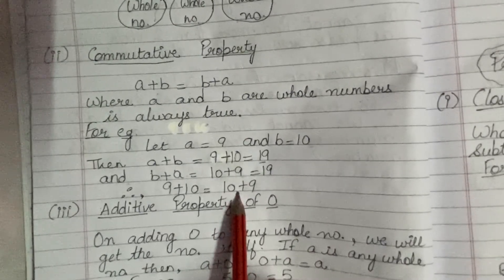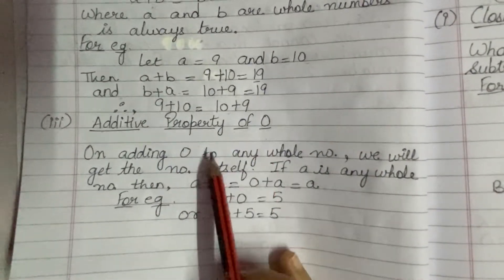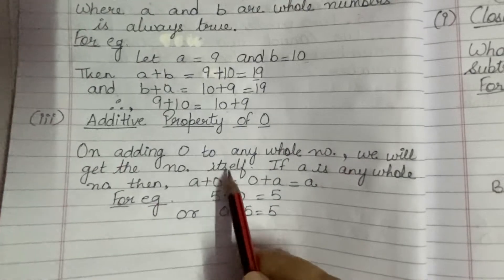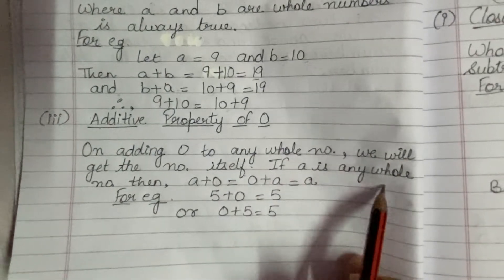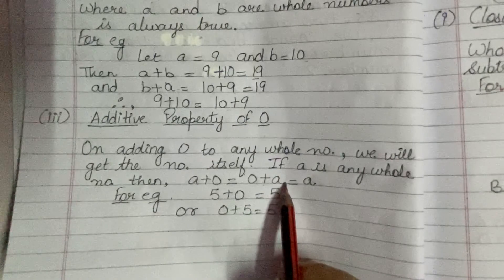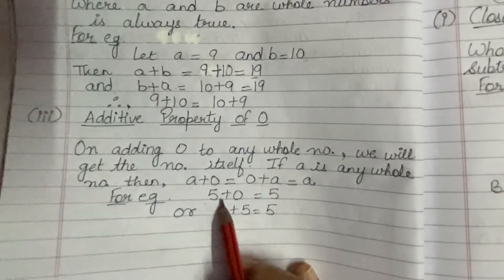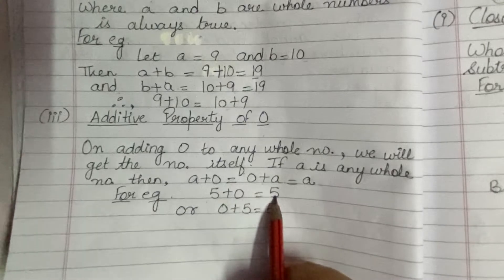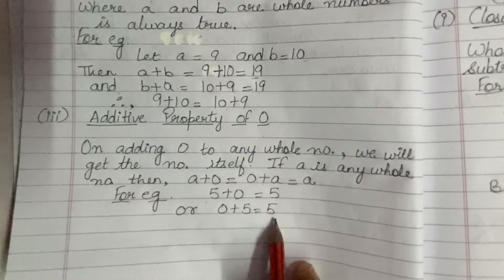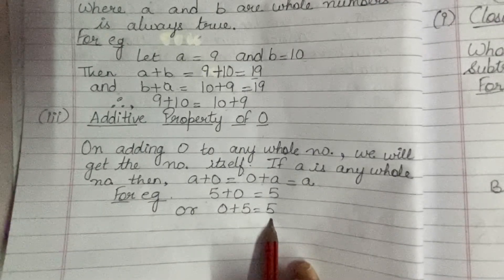Hopefully, it is also clear to you. Next is additive property of 0. It says that on adding 0 to any whole number, we will get the number itself. If A is any whole number, then A plus 0 is same as 0 plus A is equals to A. For example, if I will add 5 to 0, then I will get 5. Or if I will add 0 to 5, then also I will get 5. I hope third property is also clear to you.